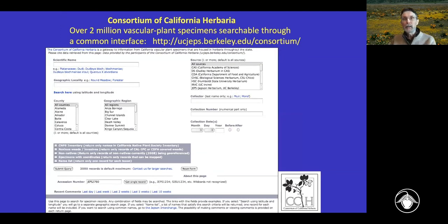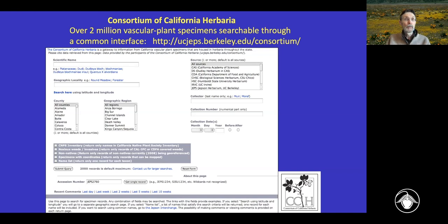The Consortium of California Herbaria I mentioned earlier is a real treasure trove of collections. The CCH1 interface for California vascular plants lets us look at digitized collection information and highlights plants that are out of range according to the Jepson eFlora treatments — so-called yellow flags — and range maps that allow us to pinpoint problems needing attention. Sometimes these are just georeferencing errors or issues with distribution strings in the Jepson eFlora, but sometimes they represent undescribed taxa or unrecognized taxa, helping identify collections of special interest.